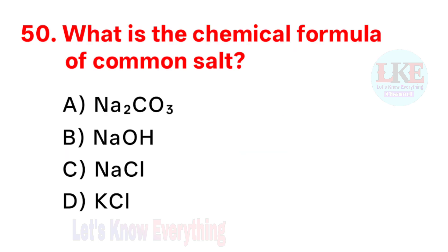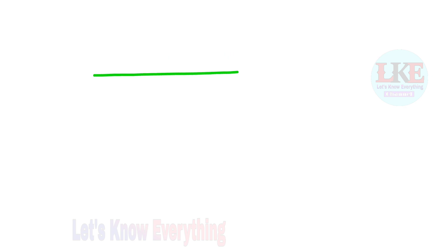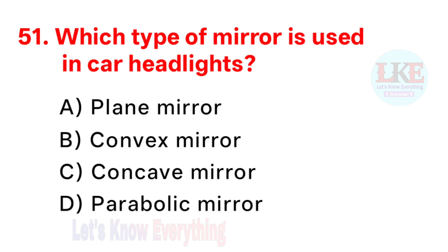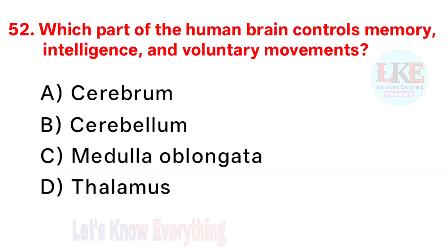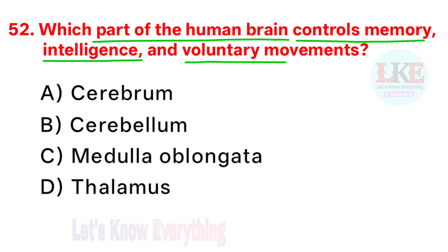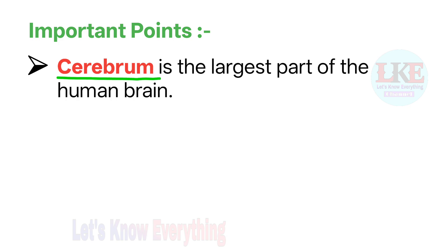Question number 50: what is the chemical formula of common salt? Right answer option C: NaCl. Question number 51: which type of mirror is used in car headlights? Right answer option C: concave mirror. Question number 52: which part of the human brain controls memory, intelligence, and voluntary movements? Right answer option A: cerebrum. For your information, cerebrum is the largest part of the human brain.